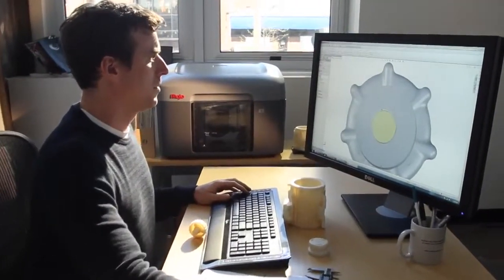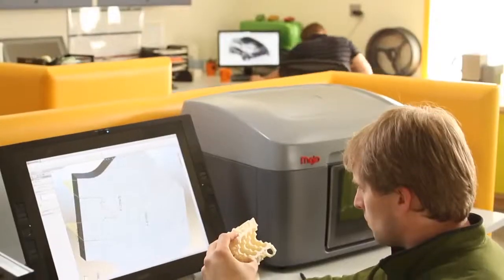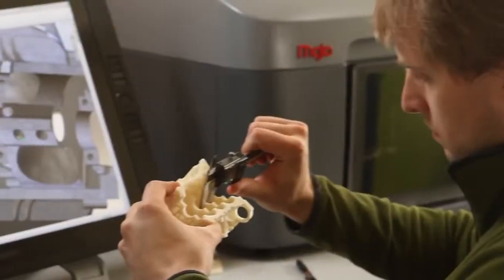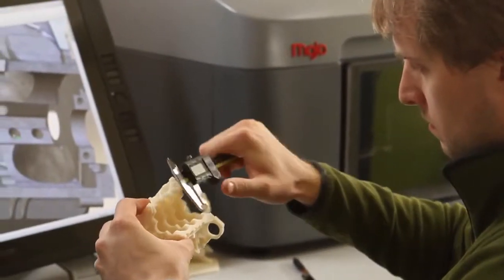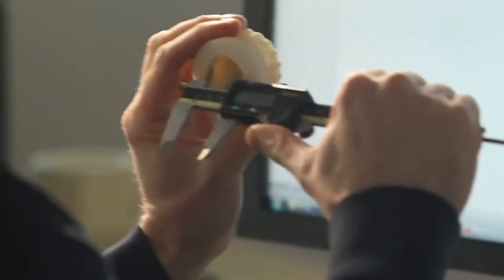Mojo is so easy to set up and use. You just unpack it, put it on your desk, and plug it in. You'll begin printing real, durable ABS plastic parts immediately.